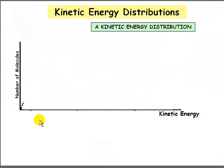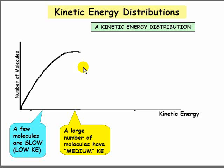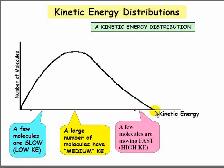This is a graph that describes the behavior of the molecules we just saw. This is the number of molecules possessing each kinetic energy. Here's low kinetic energy and here's high kinetic energy, or faster molecules. You'll notice that there are a few molecules with low kinetic energy, quite a few with medium kinetic energy, and fewer molecules with high kinetic energy. This graph shows the distribution of kinetic energies of the molecules.